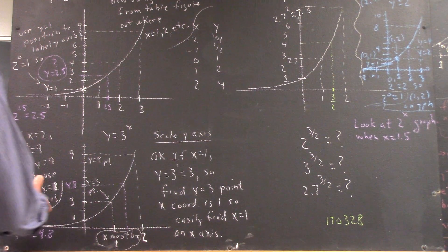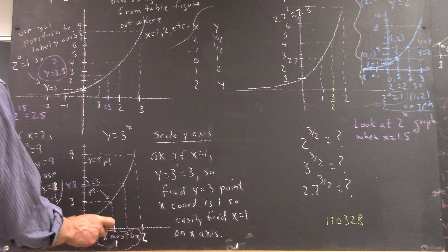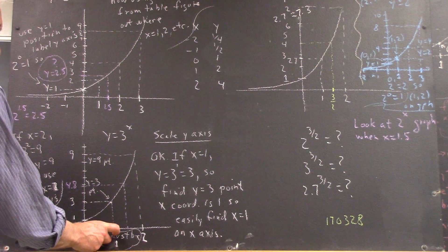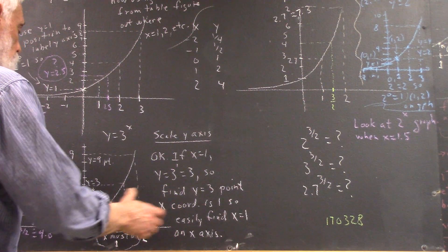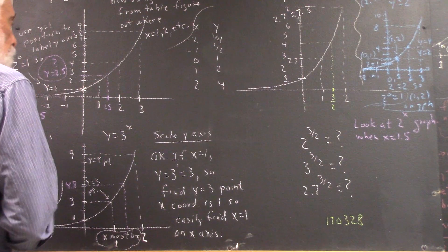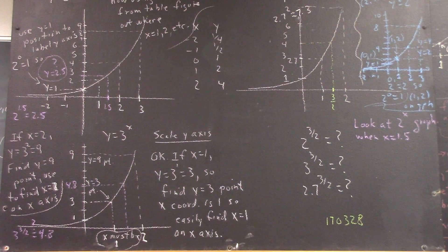Now, these two curves weren't quite identical, but we see that the scale of the x-axis is spread out a little bit more for the 3 to the x than it is for the 2 to the x. That's worth understanding.